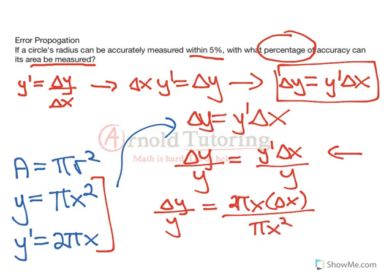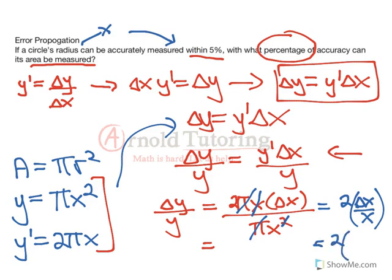We know we're looking for the left side so that can stay the same. What happens on the right here? Well, the pi cancels, the pi cancels. One of the x's on the bottom cancels with the x on the top. And we're left with 2 delta x over x. Awesome. Why is that awesome? Because we know that our radius, which is our x value, can be measured within 5%. Which means that delta x over x, remember that's the percentage, is 0.05.